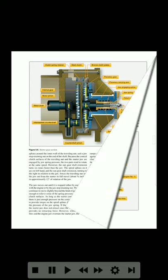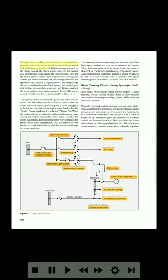When the starter jaw first engages the engine jaw, the motor armature has had time to reach considerable speed because of its high starting torque. The sudden engagement of the moving starter jaw with the stationary engine jaw would develop forces high enough to severely damage the engine or the starter were it not for the plates in the clutch pack that slip when the engine torque exceeds the clutch slipping torque. In normal direct cranking action, the internal steel gear clutch plates are held stationary by the friction of the bronze plates with which they are interleaved. When the torque imposed by the engine exceeds the clutch setting, the internal gear clutch plates rotate against the clutch friction, allowing the planet gears to rotate while the planetary carrying arm and the jaw remain stationary.